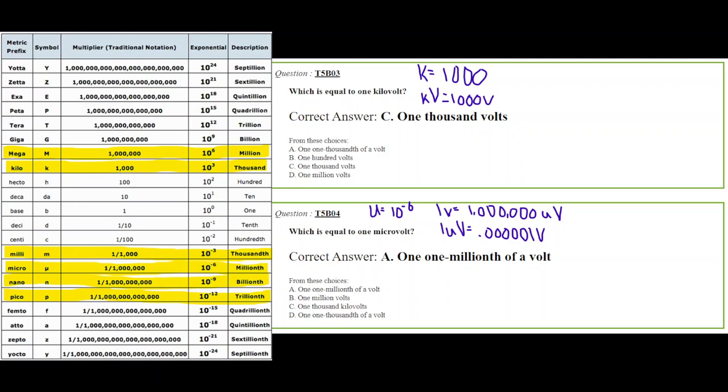So the next question says, which is equal to 1 microvolt? Now, if you look at the chart to the left there, a micro is 10 to the negative 6, which is a millionth. So which one of these answer choices is equal to 1 microvolt? So a microvolt is 1,000,000th of a volt. So you can just remember that if you want to, because that is a direct conversion. So if you had 500 microvolts, that'd be 500,000,000th of a volt.